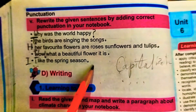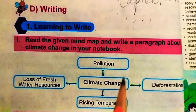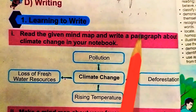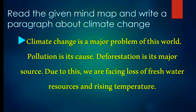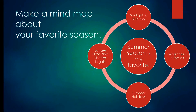Next is the D part — mind map. You have to read and write a paragraph about it. Climate change is a major problem of this world. Pollution is its cause and deforestation is its major source. Due to this we are facing loss of fresh water resources and rising temperatures.